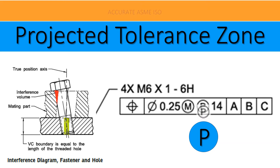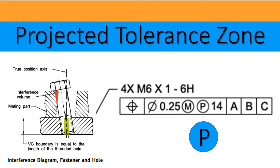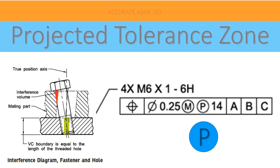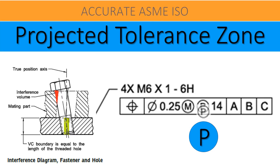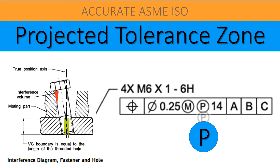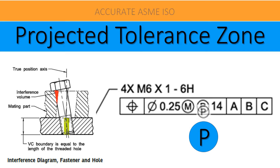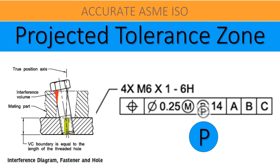Welcome to Accurate Learning YouTube channel Accurate SME ISO. In this video, let us learn about a modifier: Projected Tolerance Zone. It is one of the important modifiers for threaded holes and studs or pins, to avoid interferences in assemblies. Please subscribe the channel to receive all upcoming videos. Let's begin now.